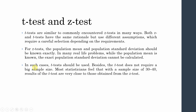The t-test does not require a large sample size. Many statisticians feel that with a sample size of 30 to 40, results of the t-test are very close to those obtained from the z-test. The minimum sample size for each group should be at least 30.